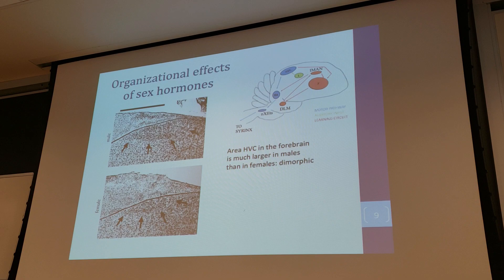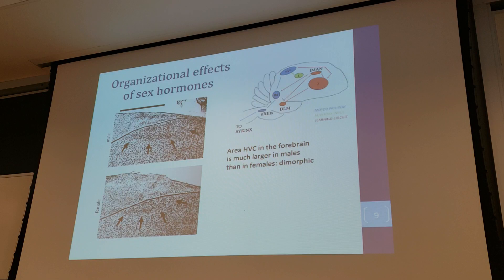If you look at the HVC in a cross section of a male brain, stained just to show the cells, and compare it to the same region in a female bird, you can see that this area — where the nuclei are denser and the cells are closer together, appearing slightly darker — is much bigger in males than in females. This is an example of dimorphism where the brains are different: this area is larger in males than in females.